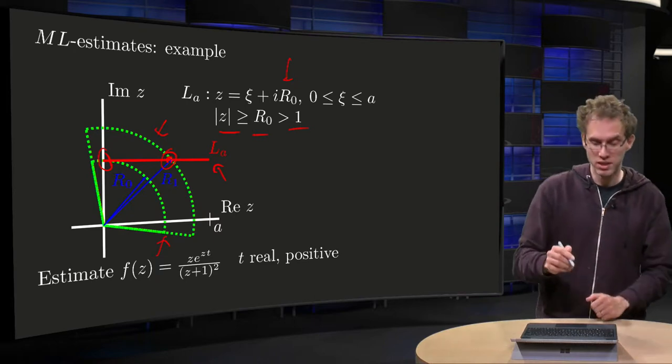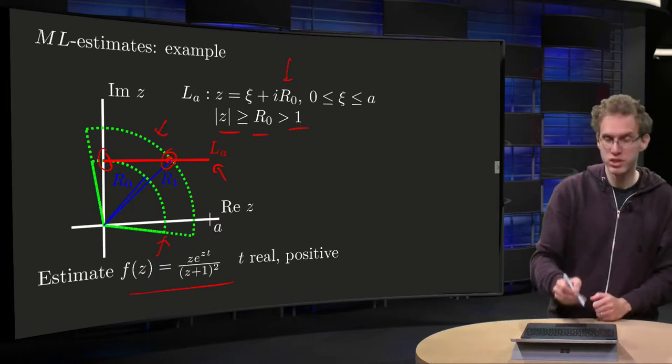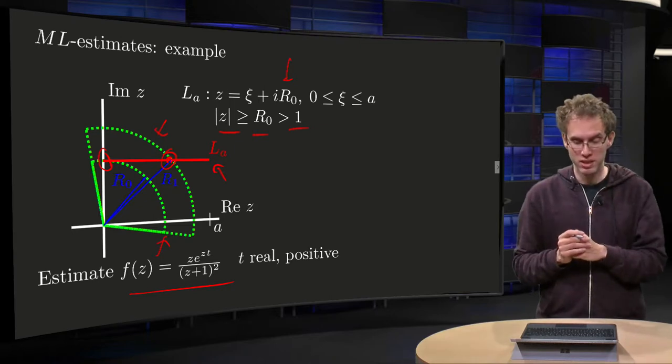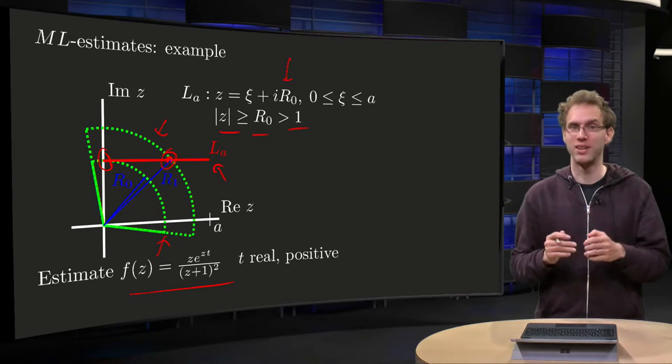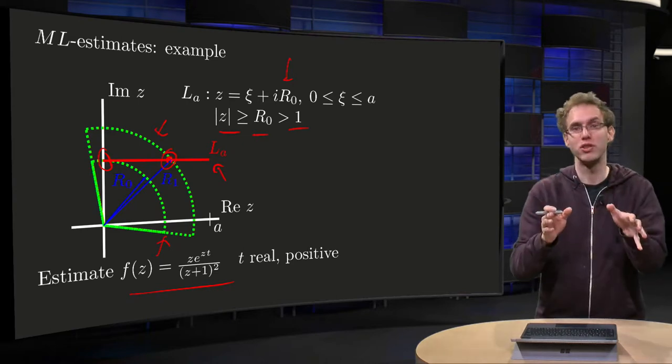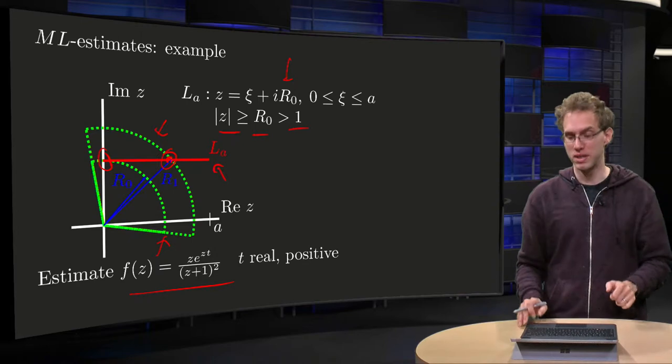Then we are going to estimate an integral and we will use the following function: z to the power zt, divided by (z+1) squared, where t is some positive real parameter. So we are going to estimate the function first, and then we are going to estimate the integral.